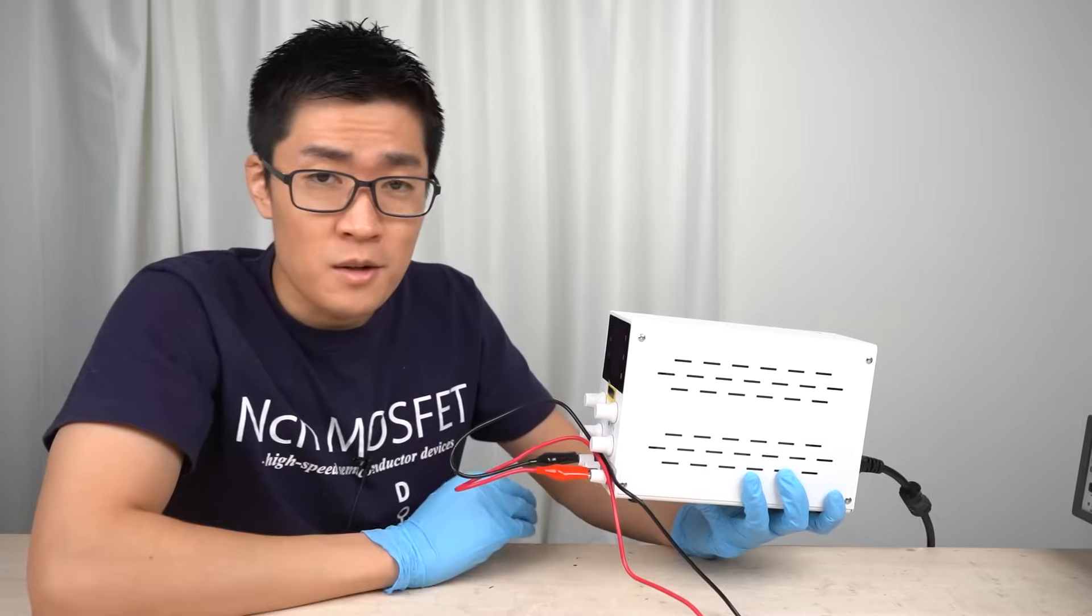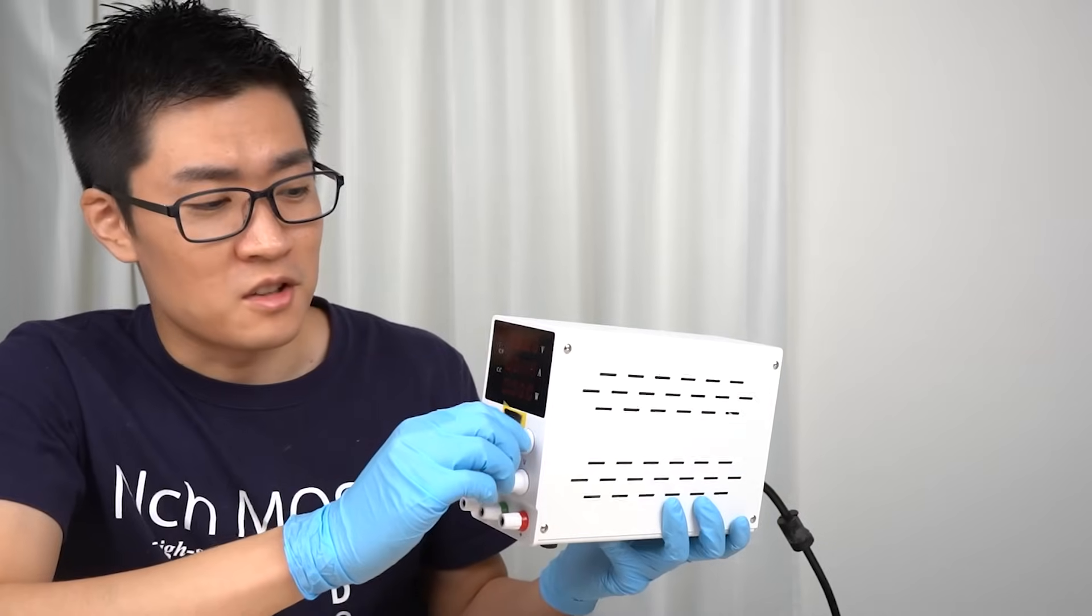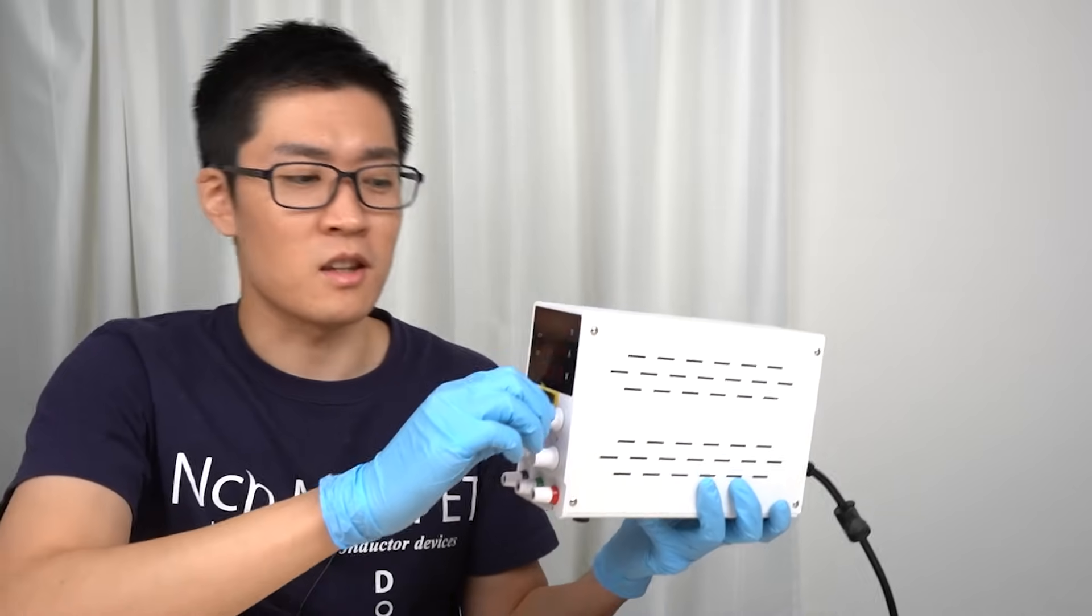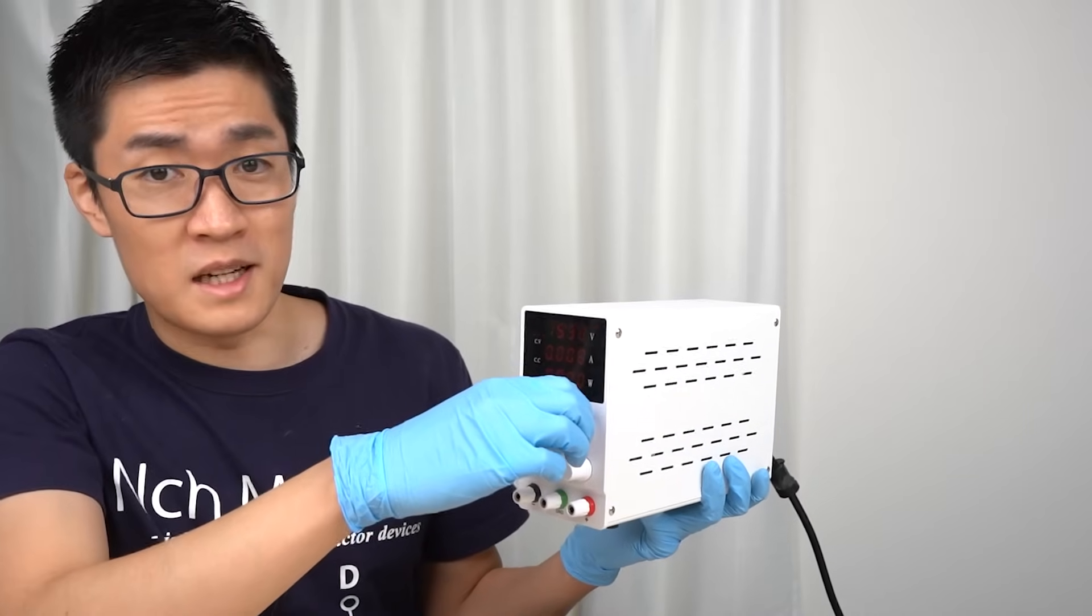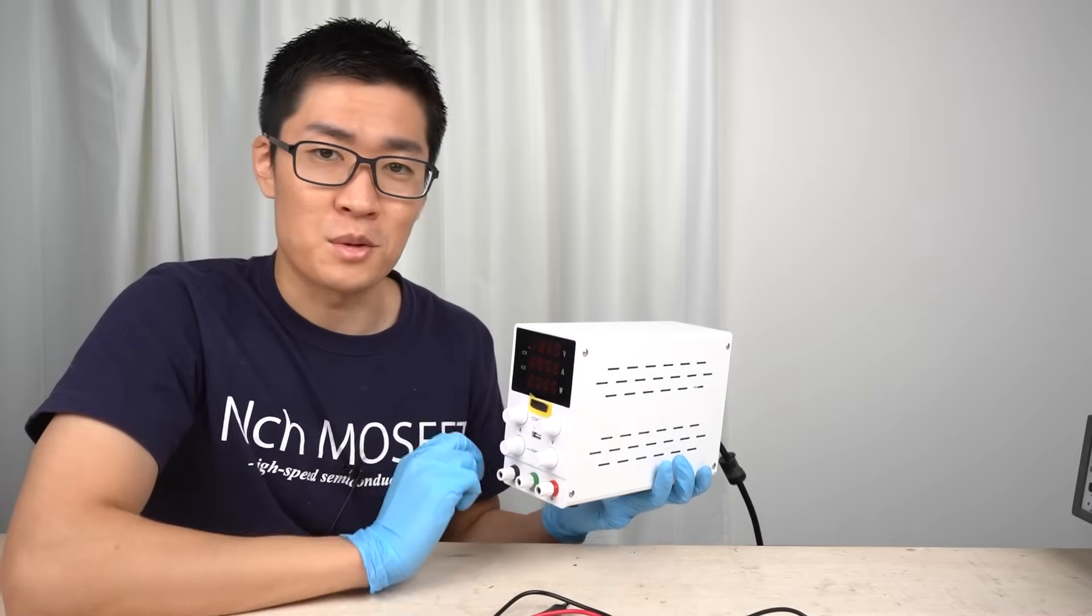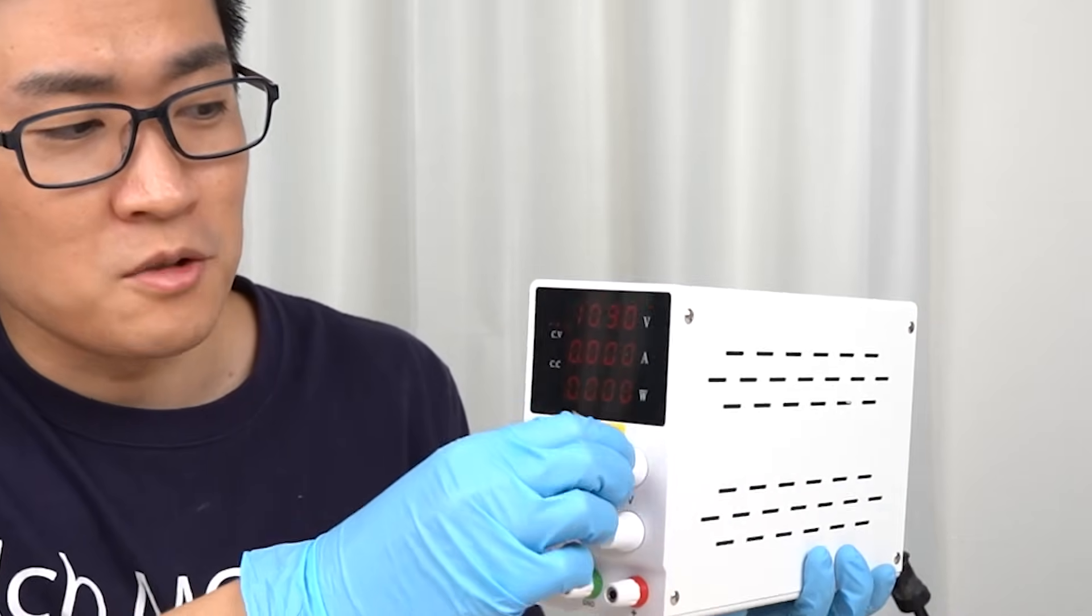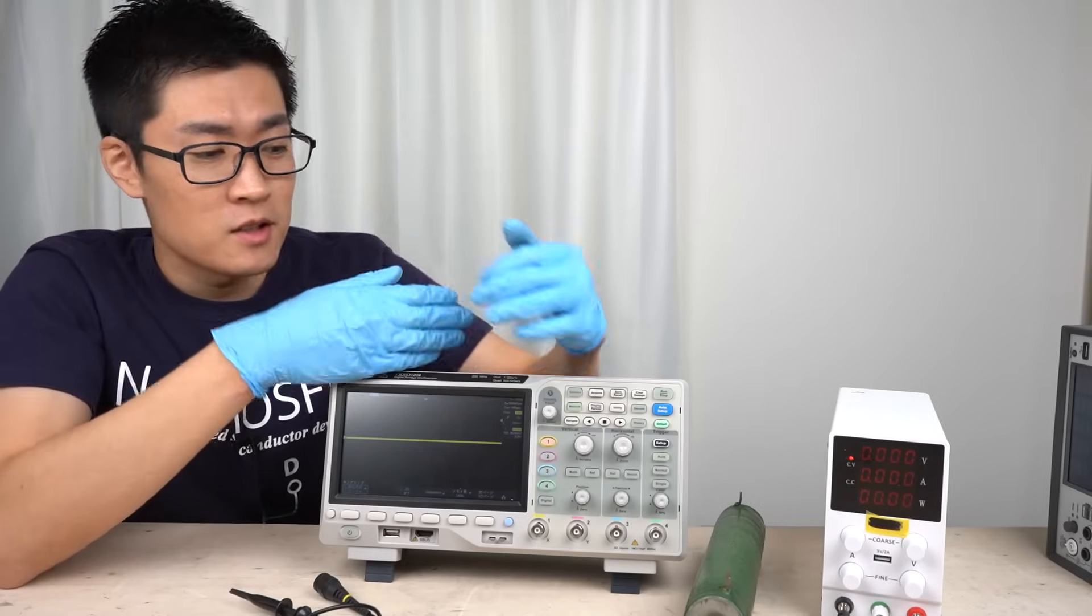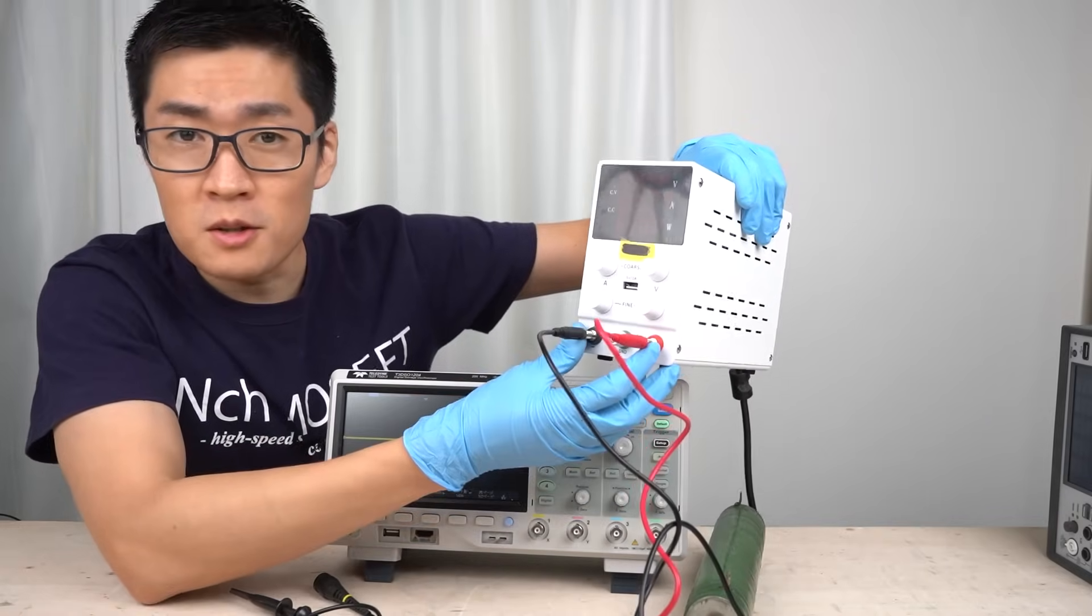You can find various types of cheap stabilized power supplies on Amazon. I can't say this for sure since I haven't disassembled other cheap power supplies, but if it's cheap, even if it looks different, I imagine the internal circuits are basically the same as this power supply. In other words, there is hardly any functional difference between any cheap power supplies. So when you choose a cheap power supply, decide which one to purchase based solely on its user interface. So that was my review of the visible part of the power supply. Next, I'm going to use the oscilloscope to look at the switching noise and the output voltage.